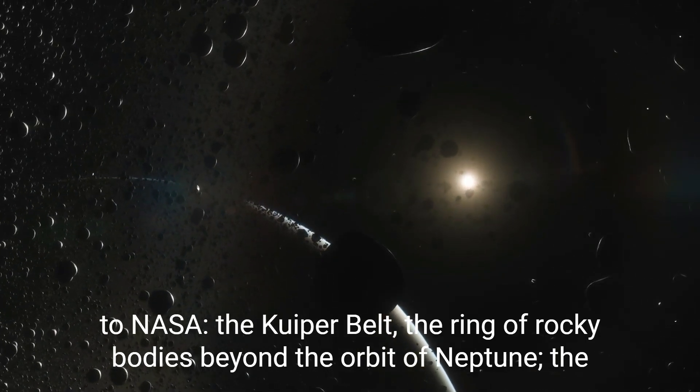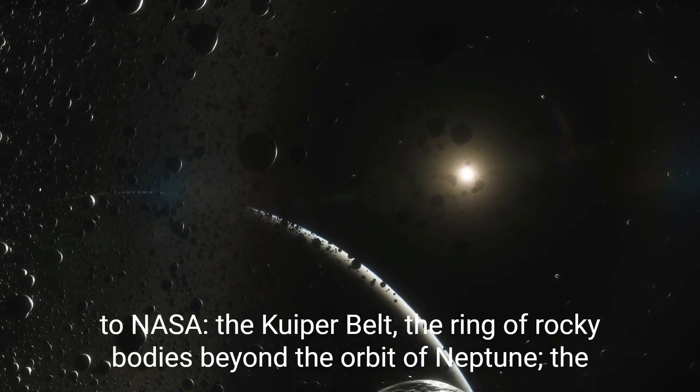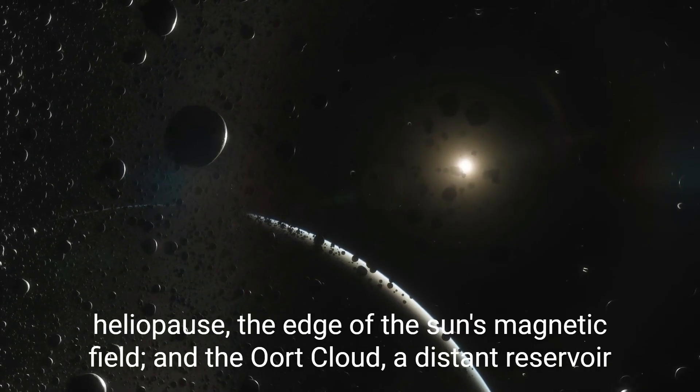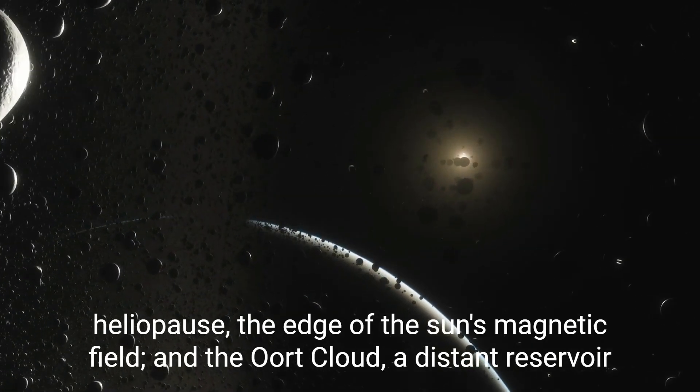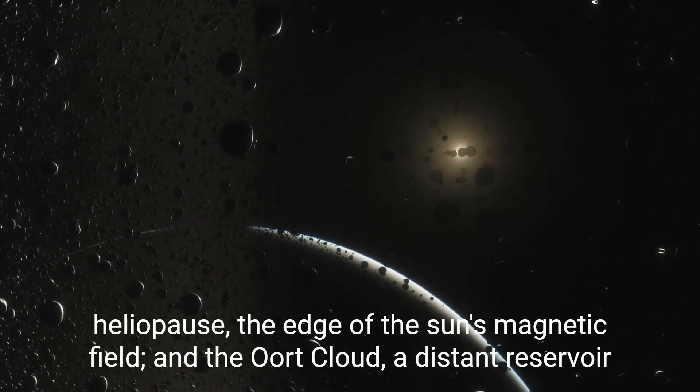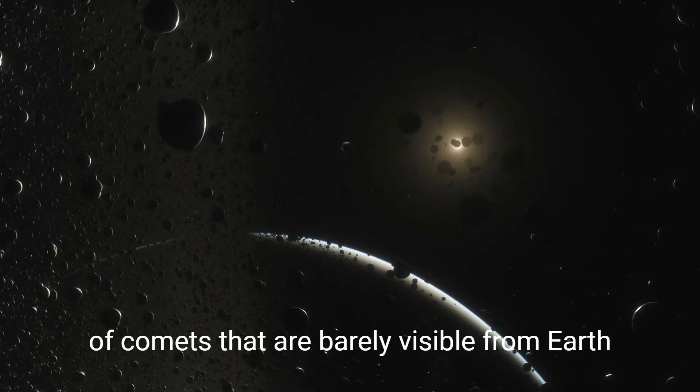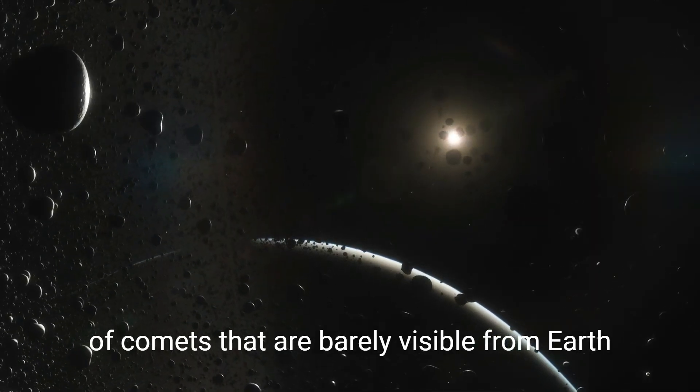The Kuiper belt, the ring of rocky bodies beyond the orbit of Neptune. The heliopause, the edge of the sun's magnetic field. And the Oort cloud, a distant reservoir of comets that are barely visible from Earth.